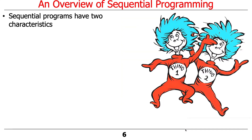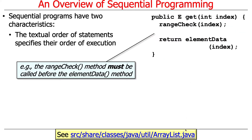There are two primary characteristics of sequential programs worth noting. One is that the textual order of the statements in your code determines the order that things get executed. Here's a snippet from the Java ArrayList implementation for the get method: we first check the range, and then we return the element data if the range was valid. Range check gets done before element data is accessed.